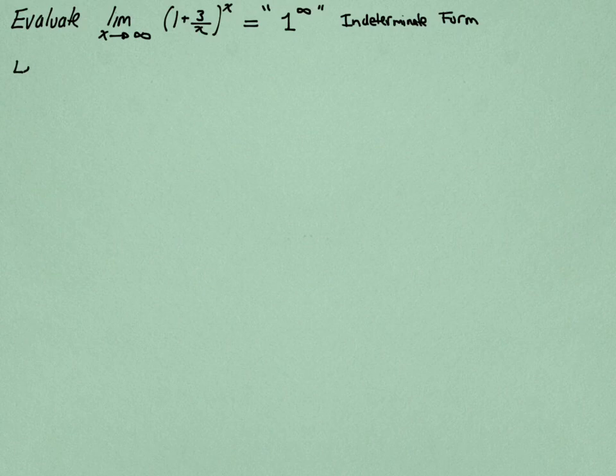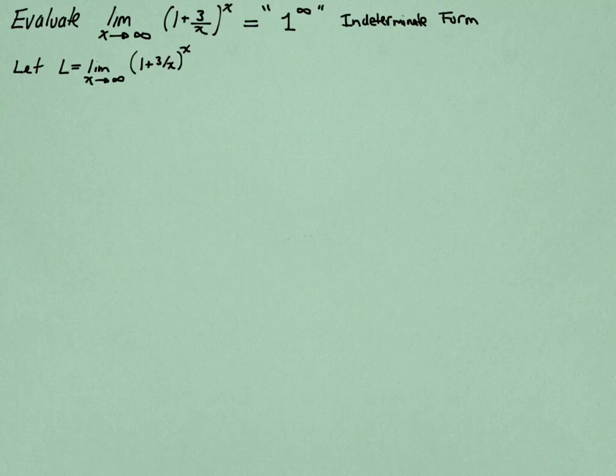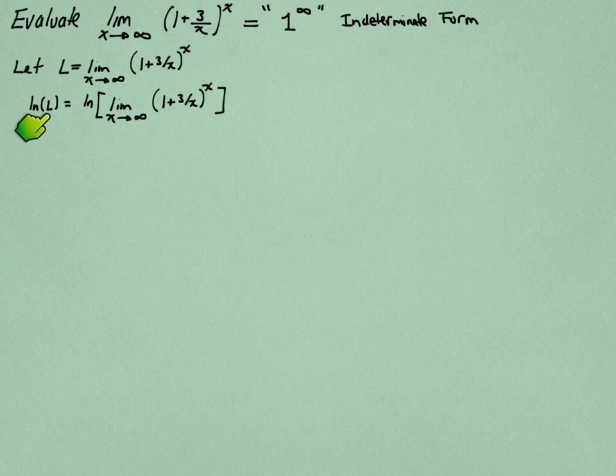We're going to use L'Hôpital's rule to calculate this limit. I'm going to call it L. And instead of calculating it directly, I'm going to calculate the logarithm of L. So I'm going to take ln, the natural log of L, and apply that to the limit. And it turns out that doing this will turn this exponential form, 1 to the infinity, into a product, and then we can get it into a form that L'Hôpital's rule will be applied to.